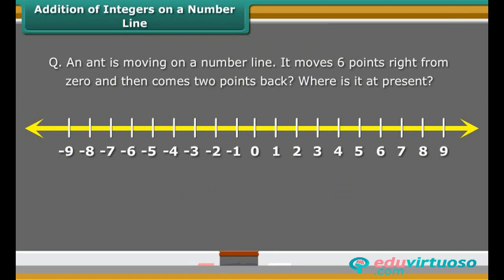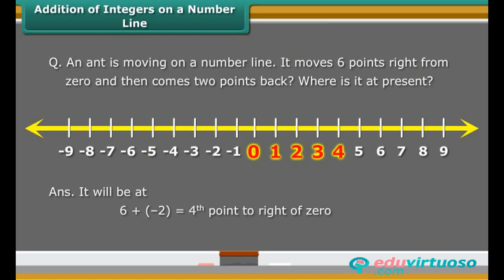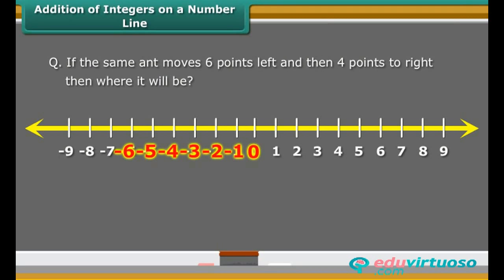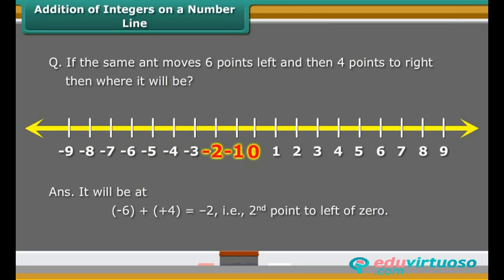An ant is moving on a number line. It moves 6 points right from 0 and then comes two points back. Where is it at present? It will be at 6 plus minus 2 is equal to 4th point to the right of 0. If the same ant moves 6 points left and then 4 points to the right, then where will it be? It will be at minus 6 plus (plus 4) equals minus 2. That is, second point to left of 0.